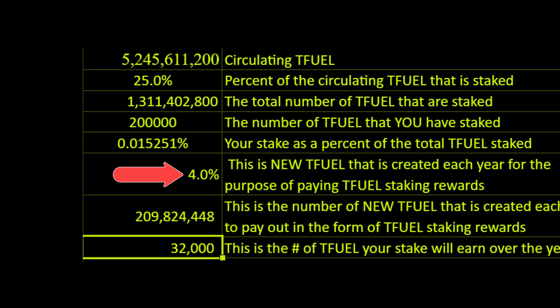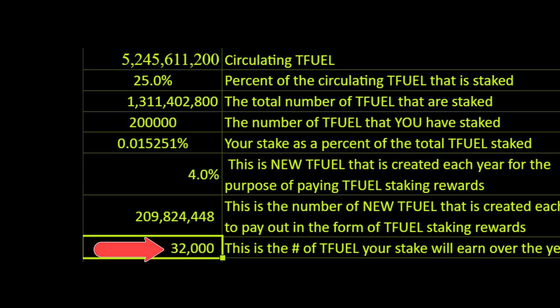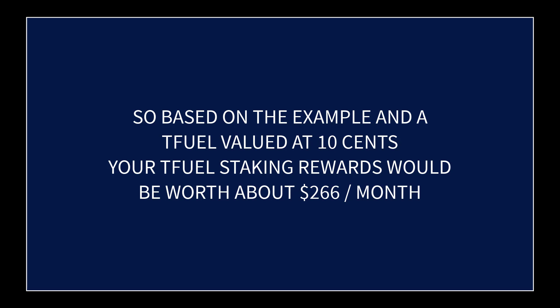Each year, the four percent represented here of the total TFuel is created or minted brand new and set aside for the sole purpose of paying out TFuel staking rewards. This number represents how many TFuel that is, based on four percent of the total. This number here is the amount of TFuel that you would earn over the course of a year in the form of TFuel staking rewards, and it comes out of that newly minted pool.